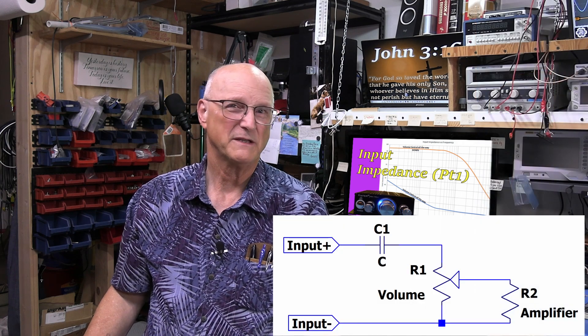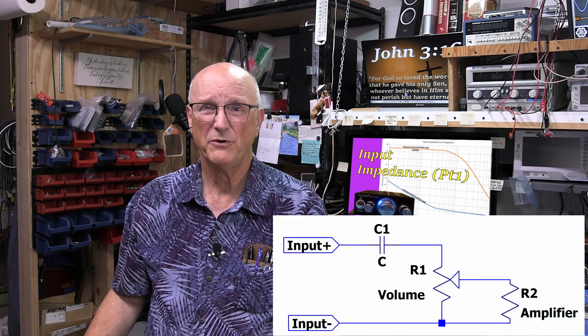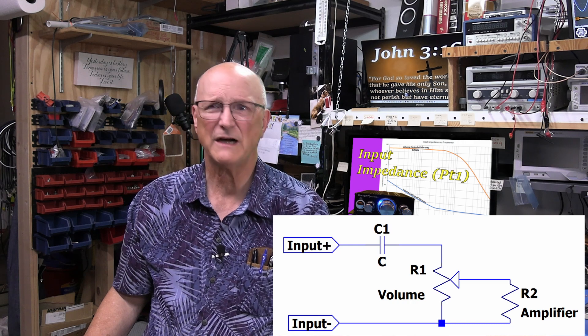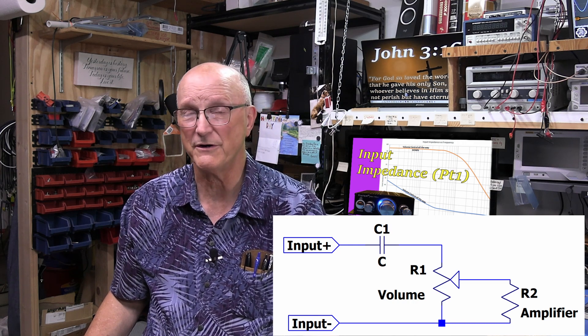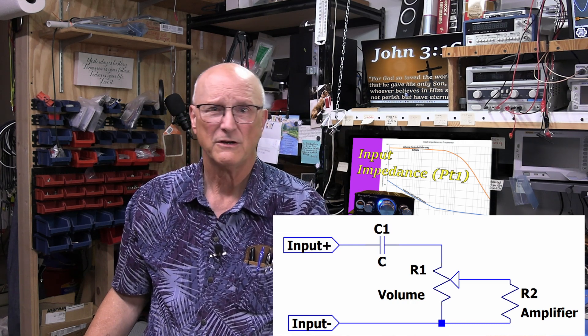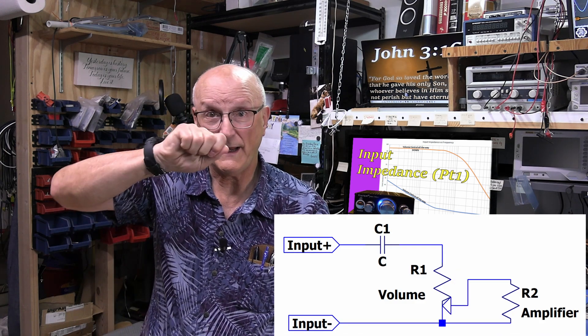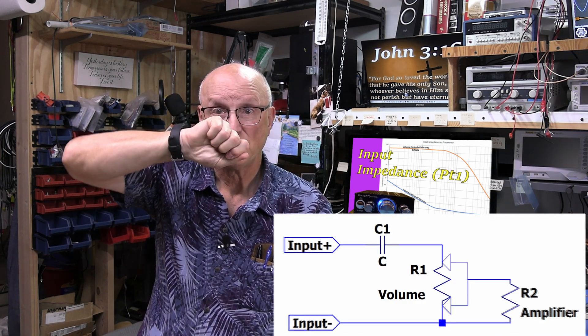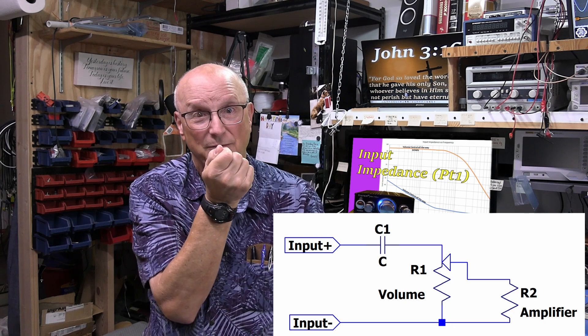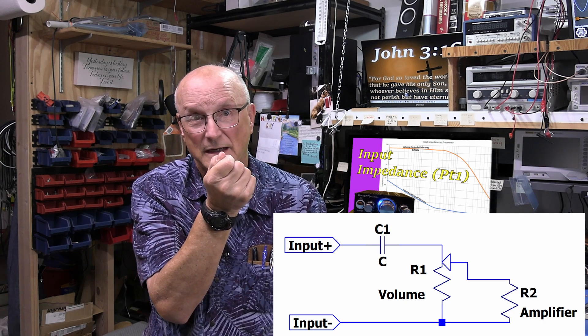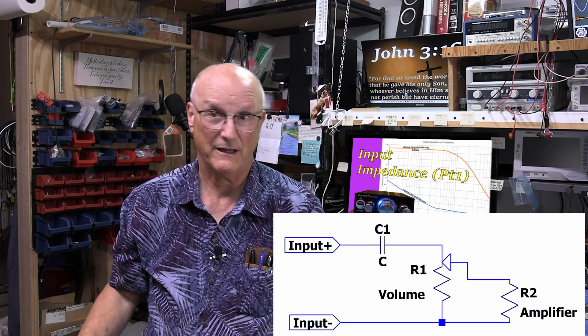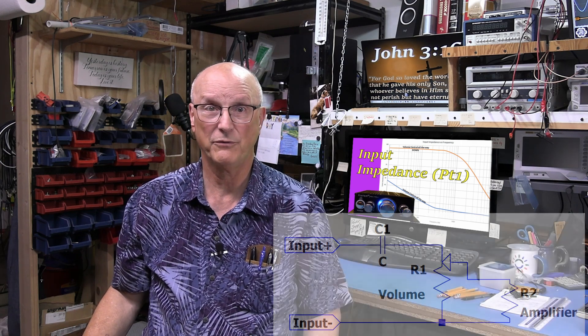Well, there are three more questions to consider. First, does the input impedance change with the volume setting? Well, in some cases, the input is connected directly to the top of the volume potentiometer. The wiper, then, goes from ground at one end to direct connection to the input at the other end. And this would most definitely affect the input impedances seen from the input.